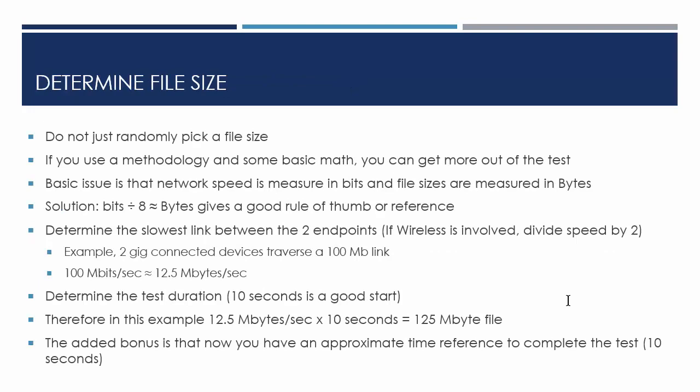So, determine the file size. Do not randomly pick a file size - and that's what I see people do all the time: 'I've got a 10-gig file, I've got a 1-gig file, let's just do that.' Wrong. If you use a methodology and some basic math, you can get more out of your test. The basic issue is that network speed or capacity is in bits, while file sizes are measured in bytes. A bit is not a byte, a byte is not a bit, and that's where people run into problems. I've actually heard people say: 'I've got a 100-meg file, it's 100 meg per second, so that should take one second.' Mathematically that's wrong. Say the whole word - megabits or megabytes - and that helps you moving forward. Bits divided by 8 gives you bytes. If you have a 100 megabit per second link, that translates mathematically to 12.5 megabytes per second. That's also helpful because some tools only report bytes, not bits.